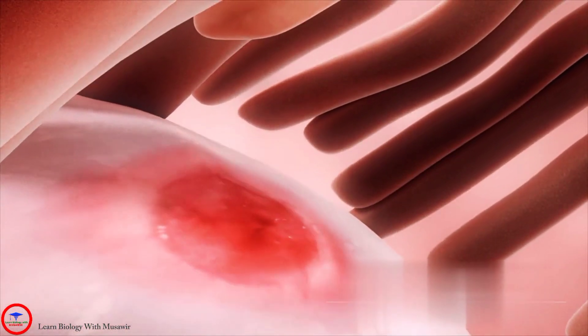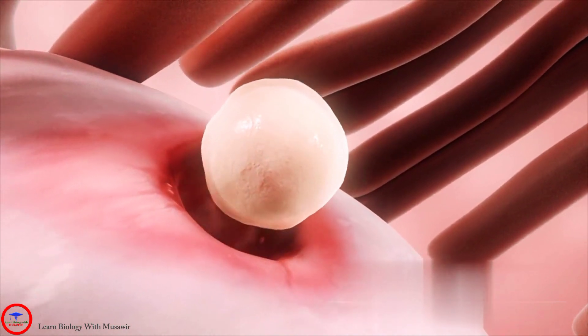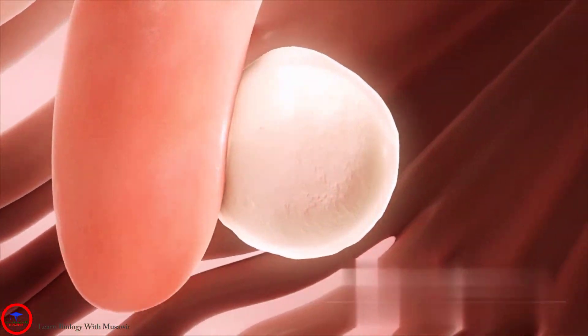The wall of the ovarian follicle ruptures at the surface of the ovary. The egg is released. Finger-like structures called fimbriae sweep the egg into the neighboring fallopian tube.